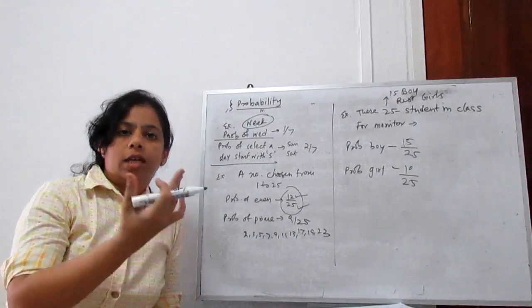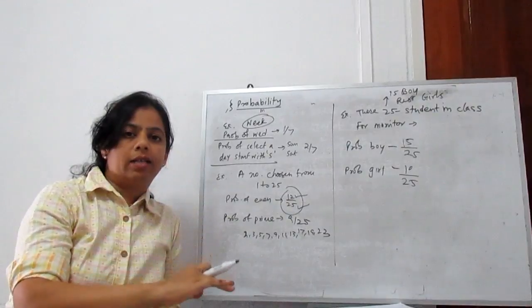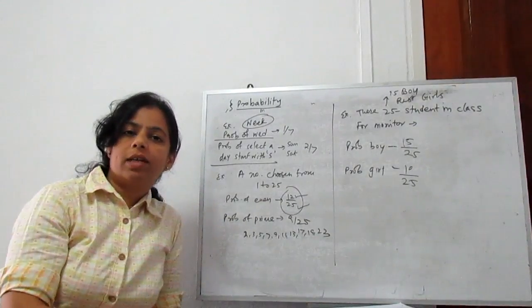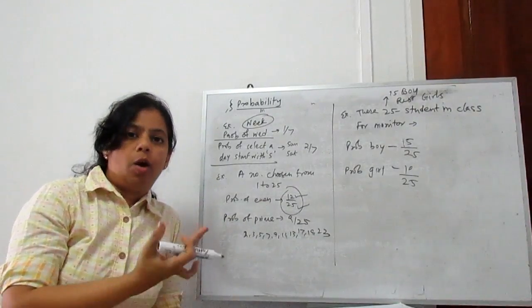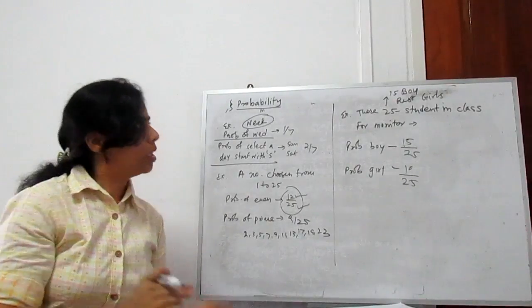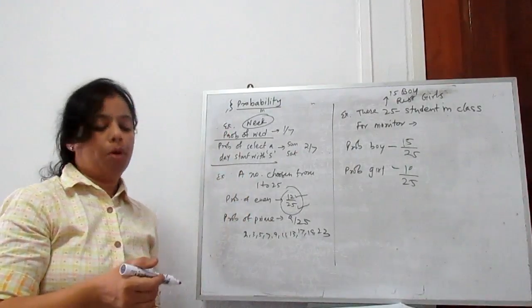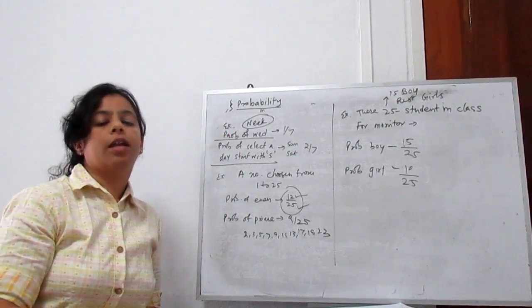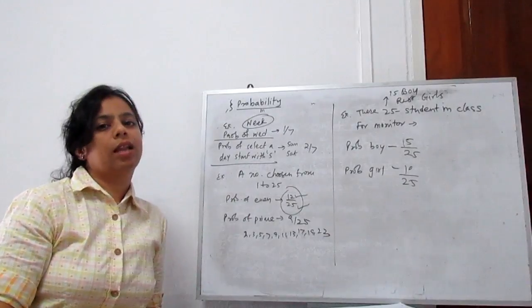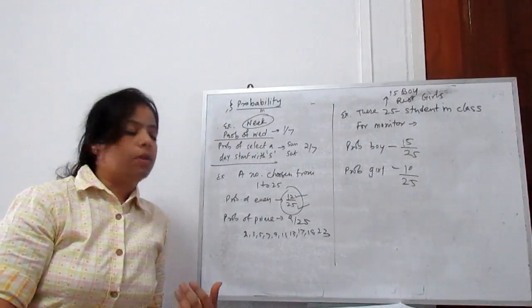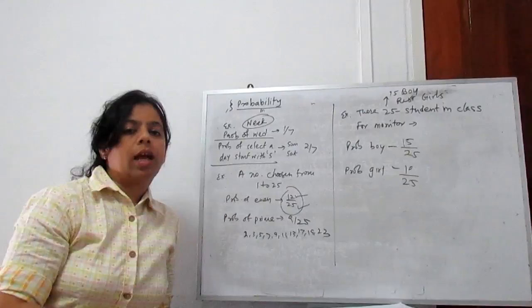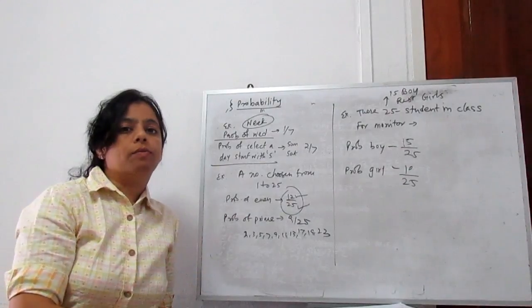So this is all about basic knowledge regarding probability. In my next lecture, we will learn about permutation, combination, and how to solve. This is all about probability.